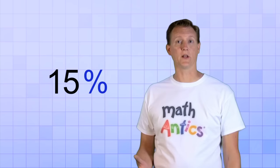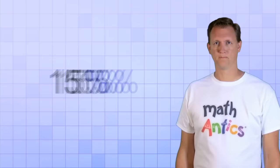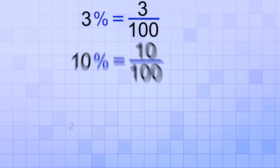Alright then, so whenever you see a percent like this, you know it can be replaced with or converted to a fraction. Let's look at a few examples so you see the pattern. 3% means 3 over 100, 10% means 10 over 100, 25% means 25 over 100, and 75% means 75 over 100. These are percents, and these are the fractions that they stand for. There's a few other interesting percents that we should take a look at.